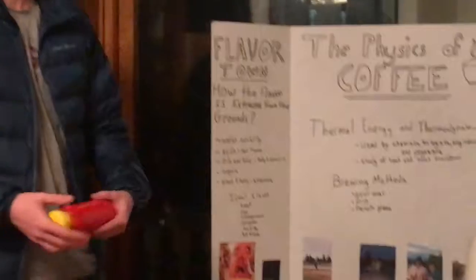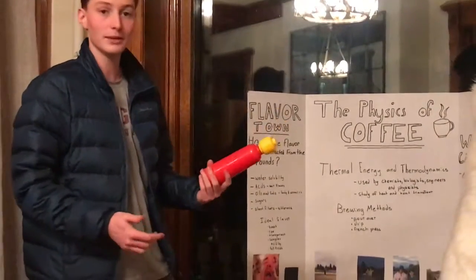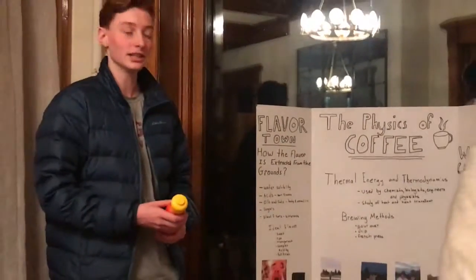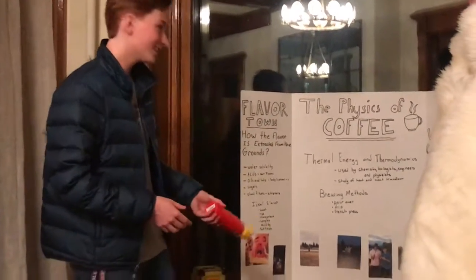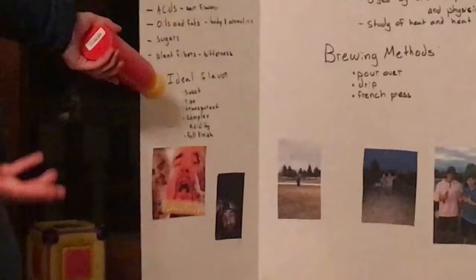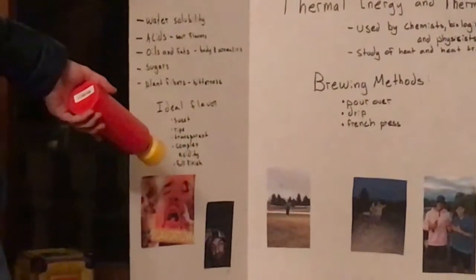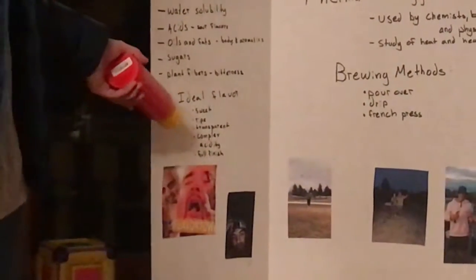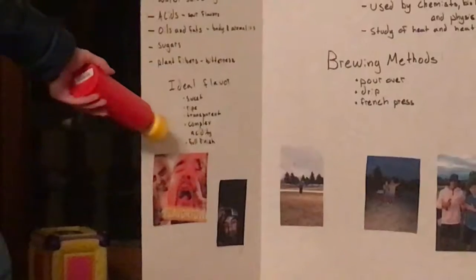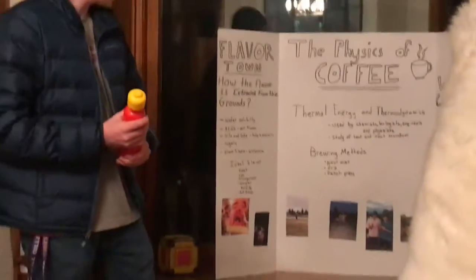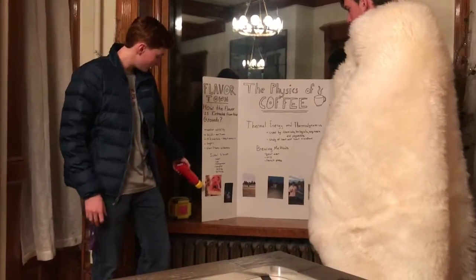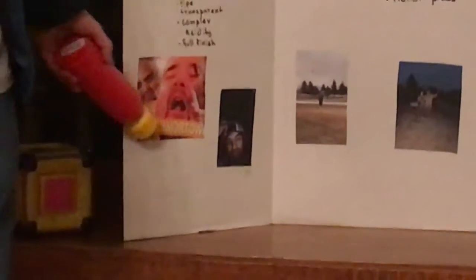The third is sugars. And fourth and finally, we have plant fibers, which are very bitter. When you make coffee, the ideal flavor that you desire is a very sweet, ripe, transparent, complete acidity, and a full finish. In order to achieve that, you need to have the coffee extract all four of these things from the particulate, and then we can achieve Flavortown.